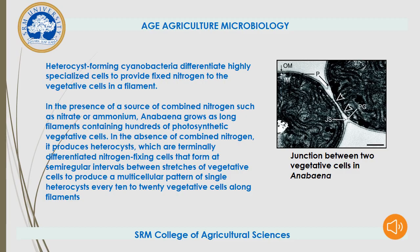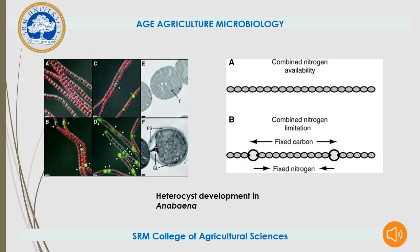In the presence of a source of combined nitrogen such as nitrate or ammonium, Anabaena grows as long filaments containing hundreds of photosynthetic vegetative cells. In the absence of combined nitrogen, it produces heterocysts, which are terminally differentiated nitrogen-fixing cells that form at semi-regular intervals between stretches of vegetative cells, producing a multicellular pattern of single heterocysts every 10 to 20 vegetative cells along filaments. This slide's picture shows how heterocyst development takes place in Anabaena.